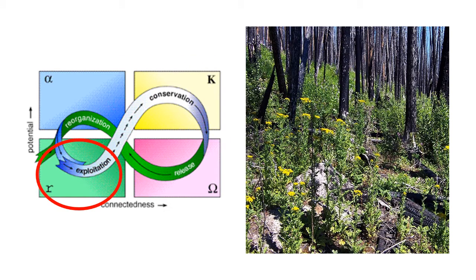Early in the cycle, the exploitation stage is a period of rapid growth as species or people exploit new opportunities and resources. It is also known as the R phase. Think of how weeds and grasses take advantage of new soil in the beginning of a forest ecosystem.